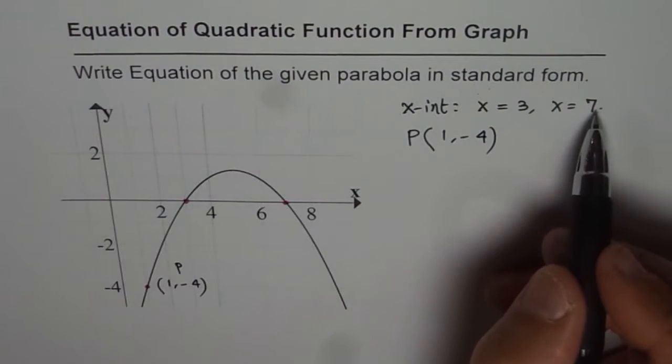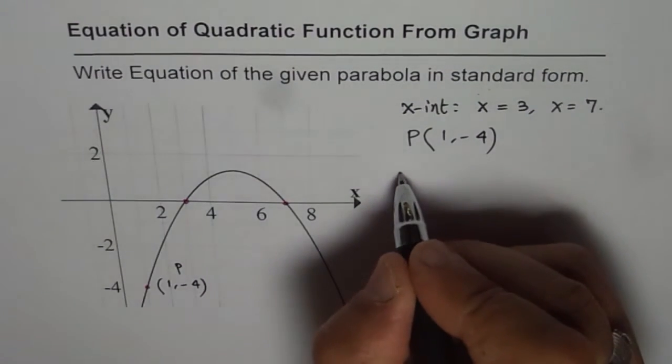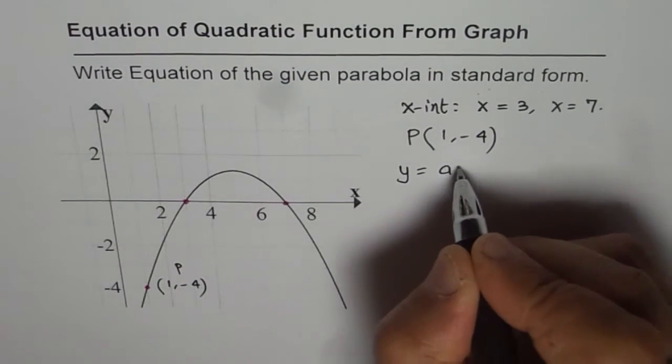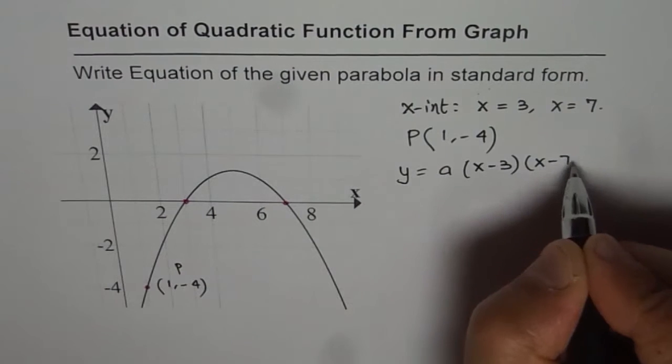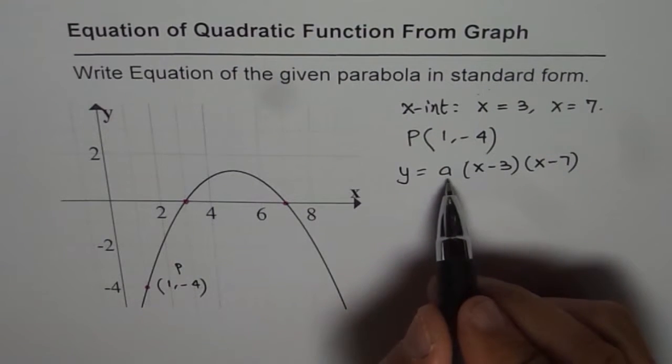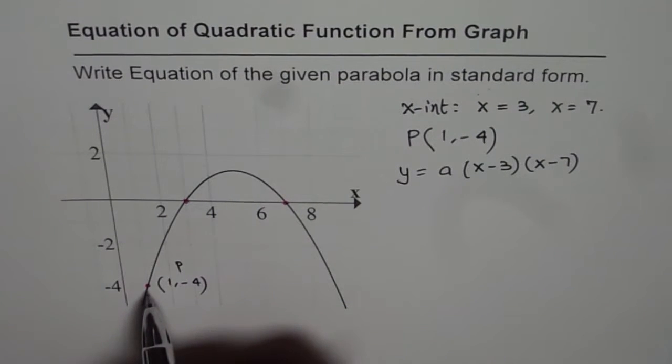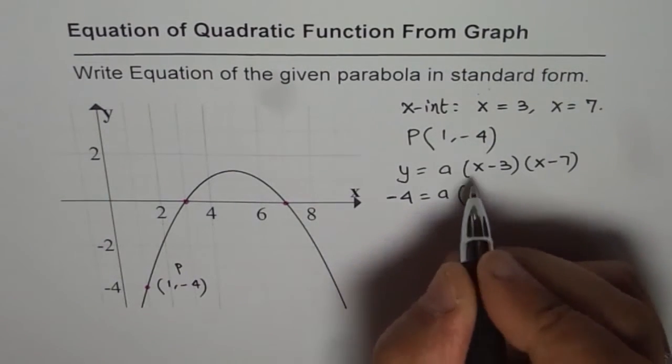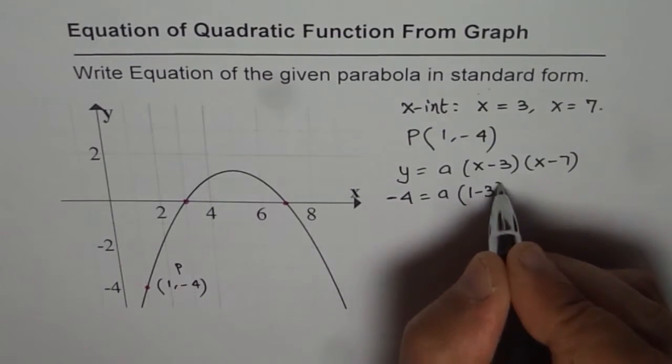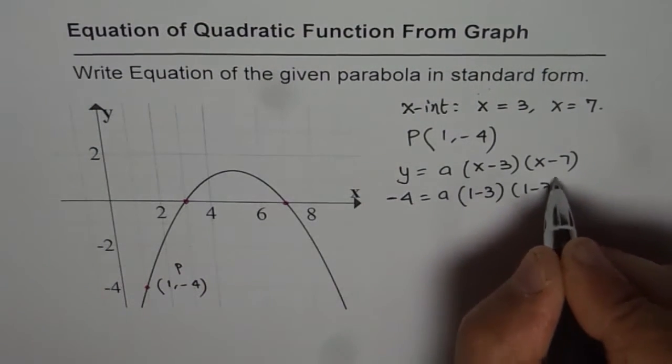Now if these are the two x-intercepts, you can write quadratic equation as y = a(x - 3)(x - 7). To find the value of a, we can use the point given to us. The y value is -4, a times x value is 1, so 1 - 3 times 1 - 7.